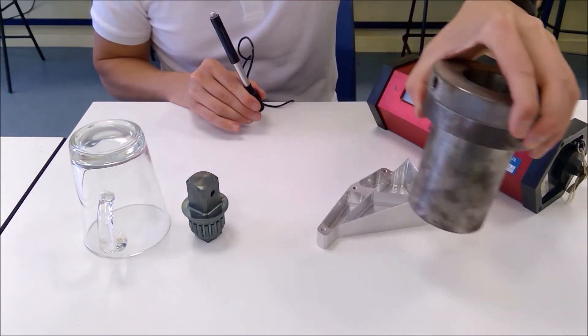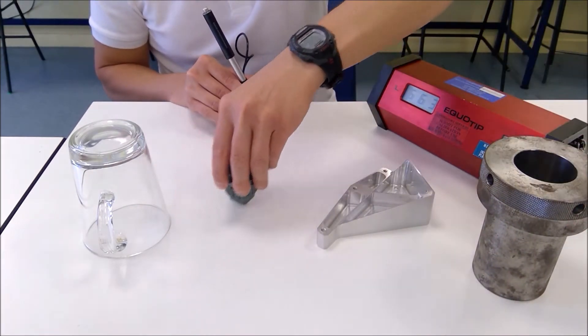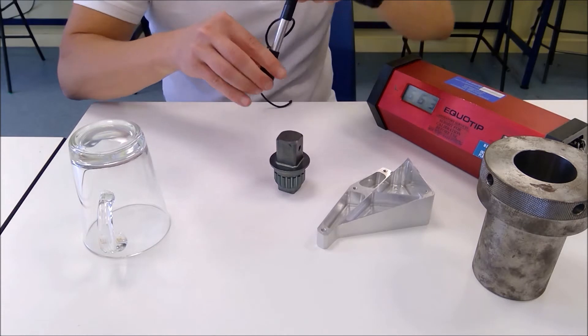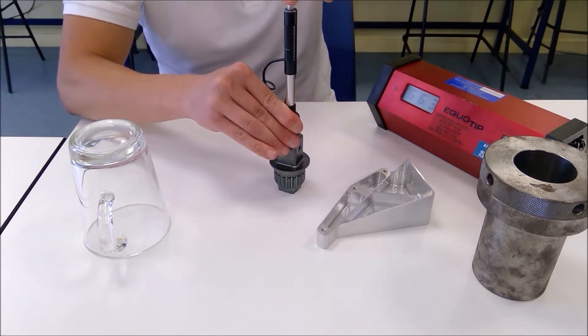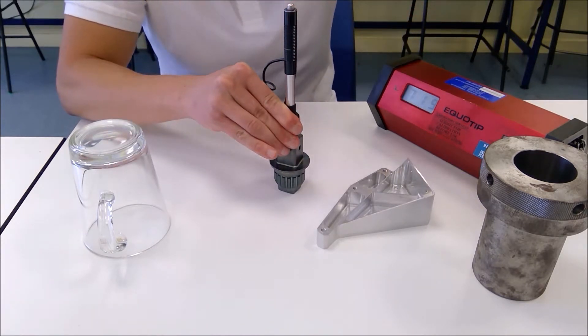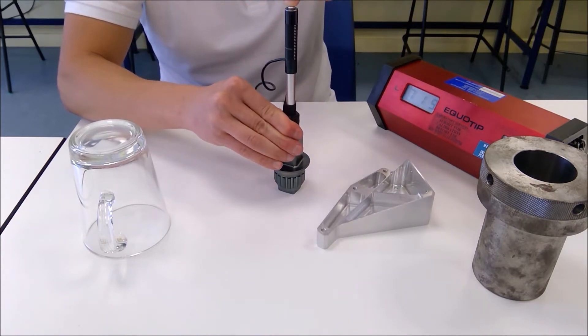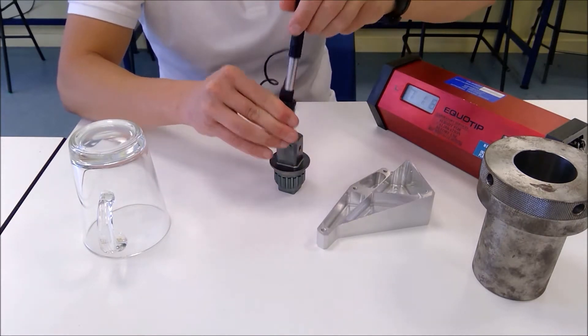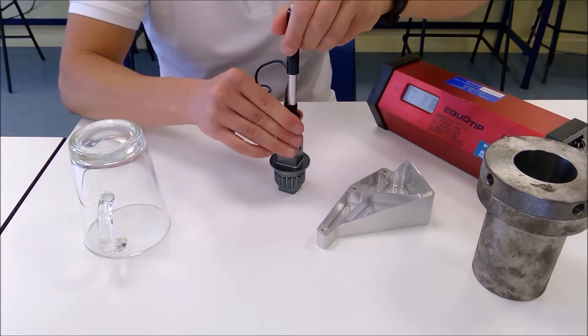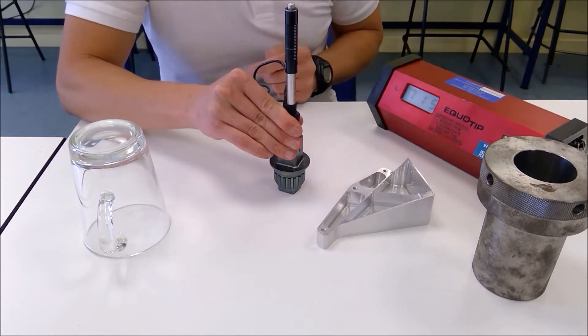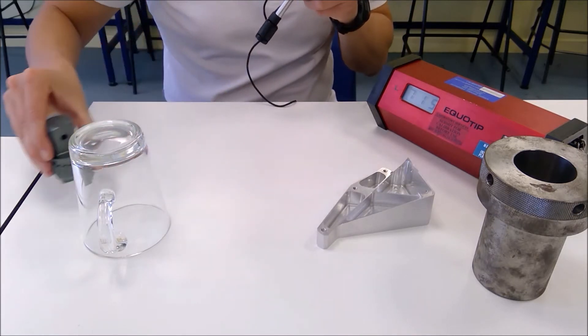Next we have high carbon steel. And for high carbon steel, we have 719, 718 and 715 again. Good consistent results there.